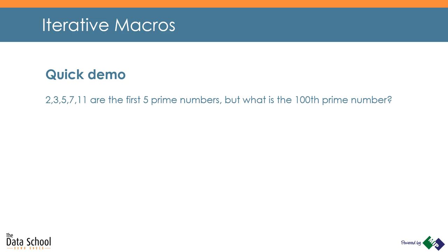The problem we're going to use for our demo today is a prime number challenge. We know the first five prime numbers are 2, 3, 5, 7, and 11, and what we've been asked to solve is what is the 100th prime number. I'm going to use Alteryx and an iterative approach to work that out. If you have any questions during the demo, add them into the chat window and our moderator will collect those questions — we'll have time to answer them at the end of the presentation.